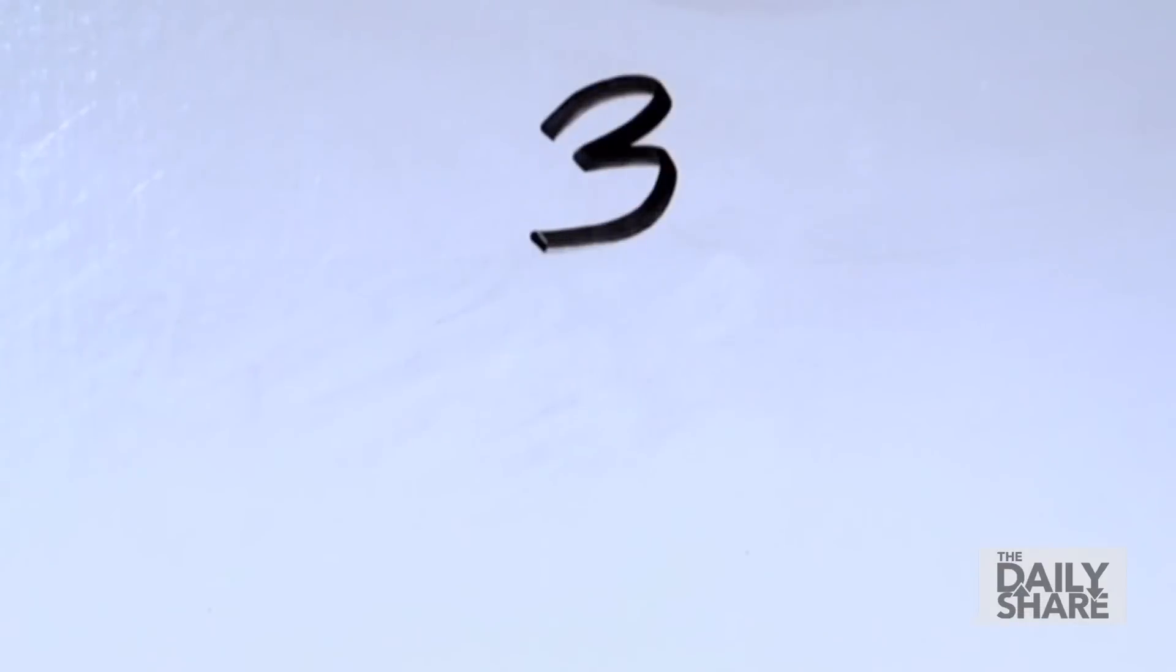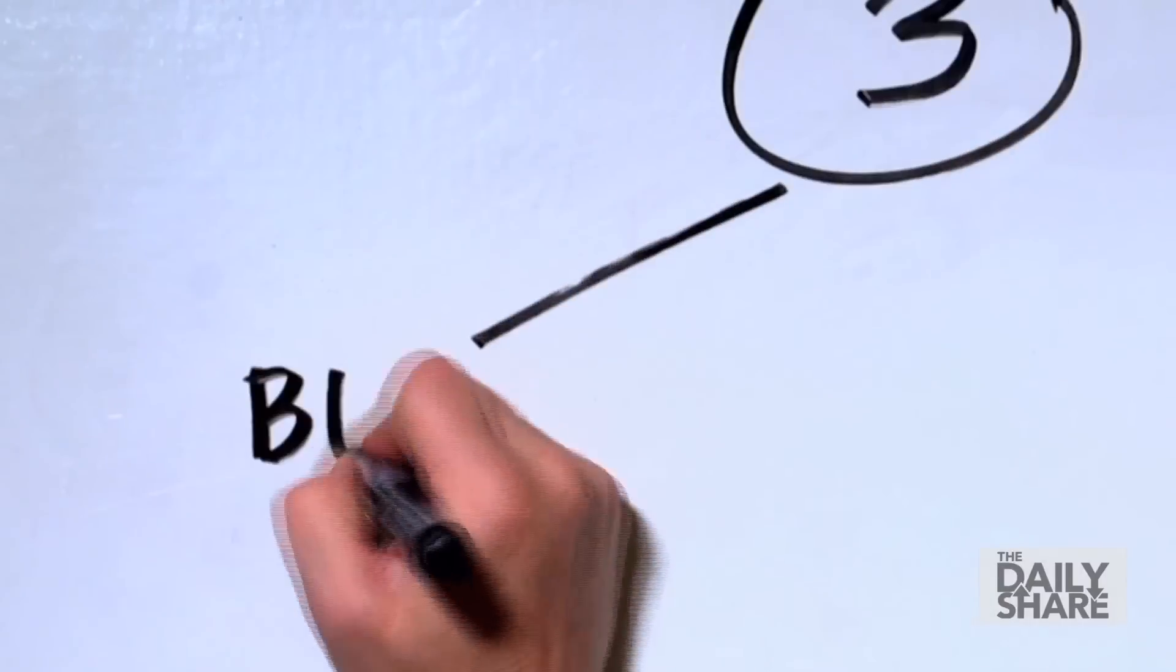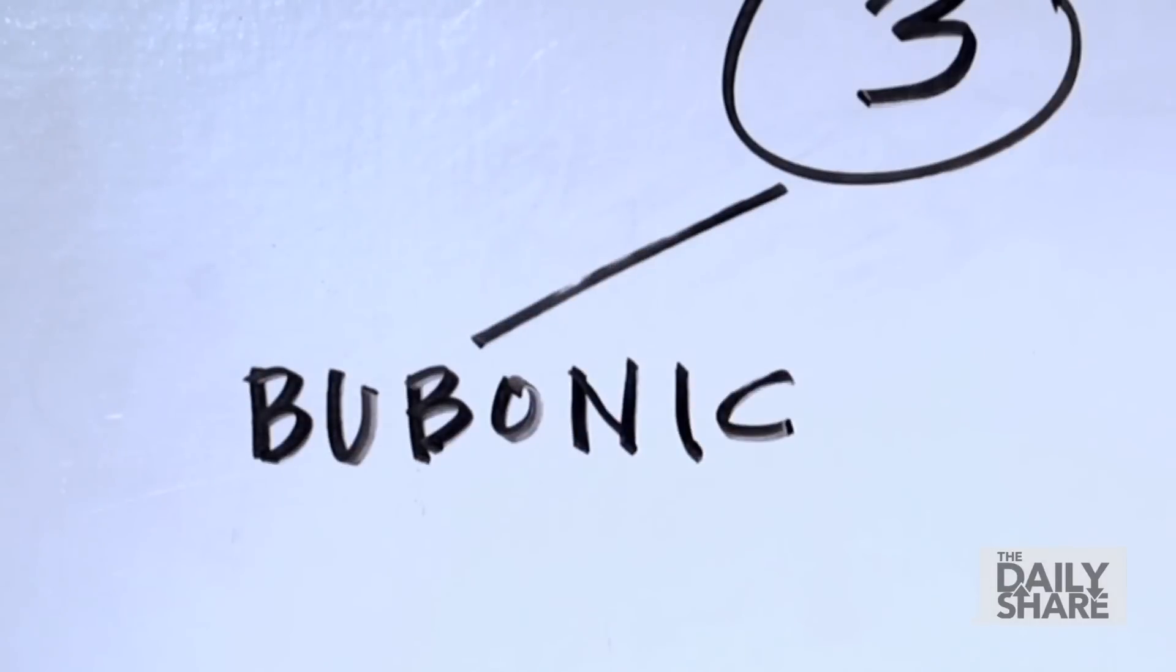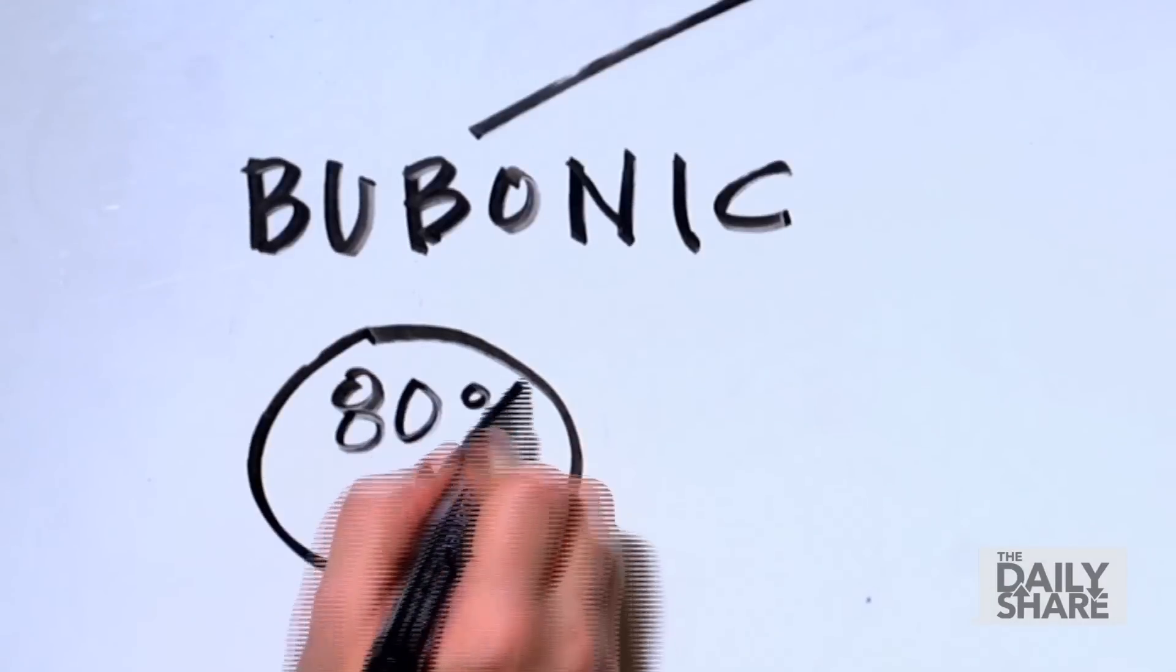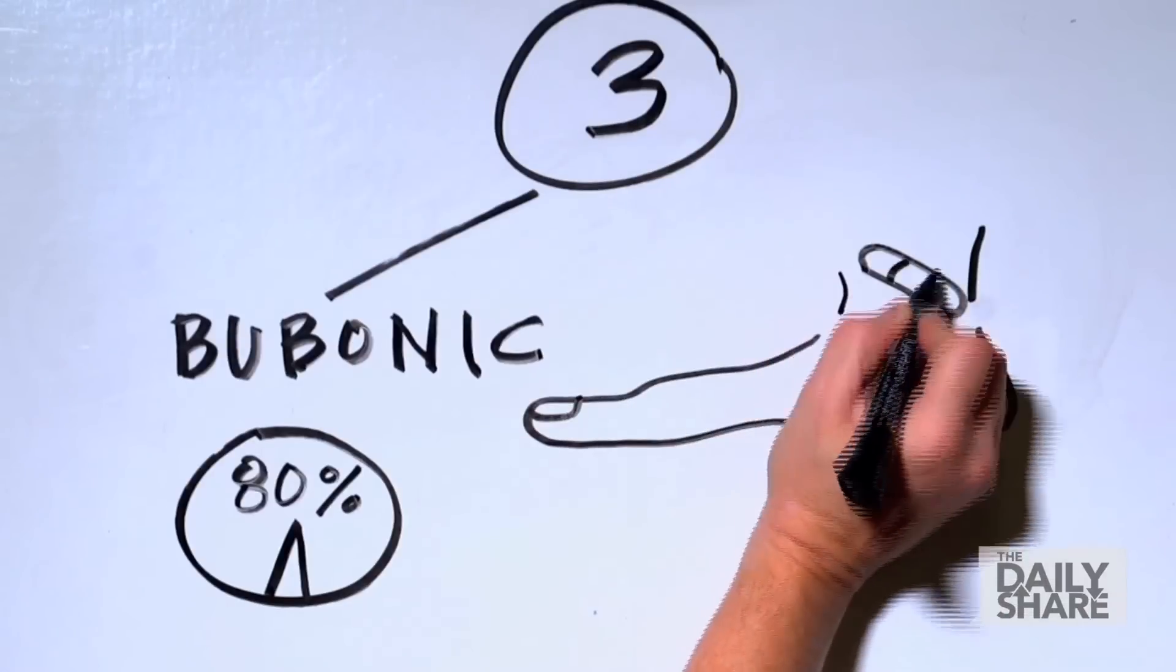There are three forms of the plague. The most common is the bubonic plague, seen in about 80% of cases in the United States. It's transmitted through a break in a person's skin.